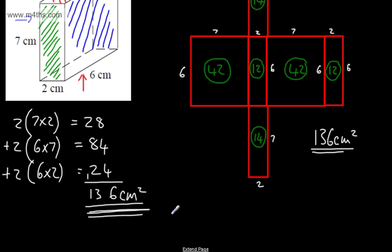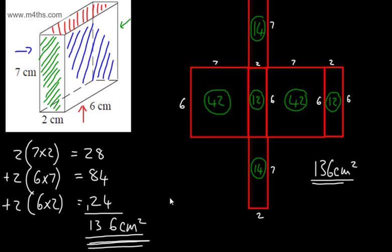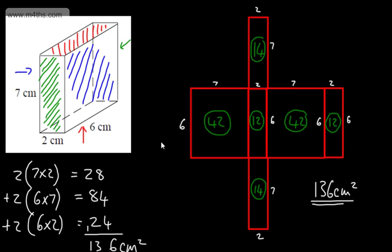So remember, your answer will always be in something squared — whether it's metres, centimetres, kilometres, it's always going to be squared if we're looking at the surface area. I prefer this method, but you can draw the net.